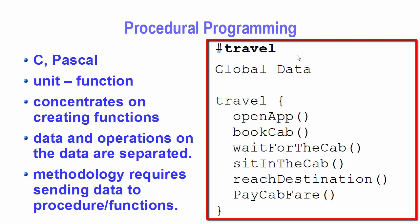Let's say you have been given a task to create a program for a passenger who wants to travel from one place to another using a cab service. If we think from the point of view of procedural programming, what we do is create some global data structure which holds the data — for example, in the case of a cab service.